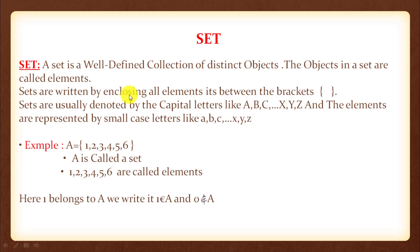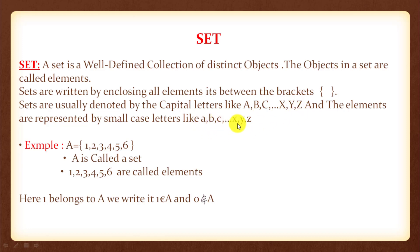Sets are written by enclosing all elements within curly brackets. Sets are usually denoted by capital letters like A, B, C, D, X, Y, Z, and the elements are represented by small case letters like a, b, c, d, x, y, z. For example, if A equals {1, 2, 3, 4, 5, 6}, then 1, 2, 3, 4, 5, 6 are called elements of the set A.